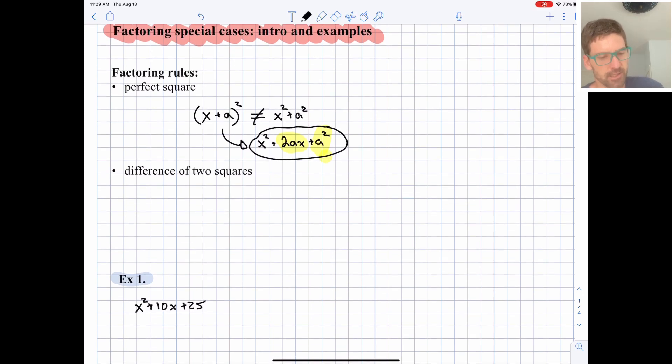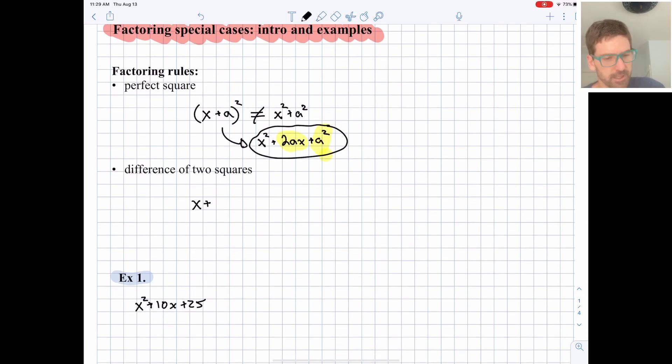Lastly, the difference of two squares. If we have (x + a)(x - a), if you multiply those out using the FOIL process, the outers and the inners cancel and we end up with x² - a². These are nice because these are the few quadratic expressions where they're binomials and we don't have a middle x term, and a² will just be a perfect square number. Let's give these a try.